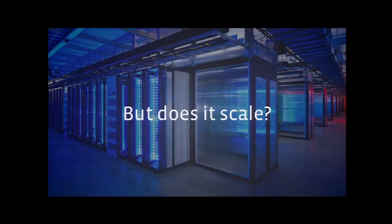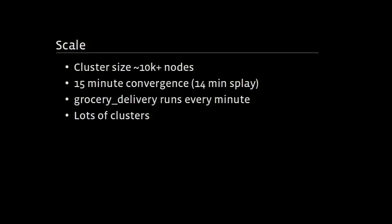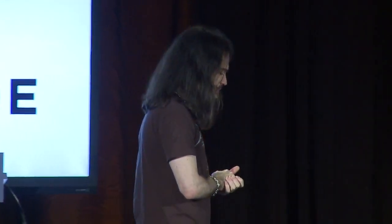Now the question on everyone's mind is: does it scale? In order to answer that, we have to define scale. Facebook has clusters of around 10,000 nodes each. We do 15-minute convergence — Chef client is cronned every 15 minutes with a 14-minute splay. Grocery delivery runs every minute, so give or take you're probably getting every change you check in deployed to the entire fleet within about 15 minutes, 30 minutes worst case. We have lots of clusters with multiple clusters per data center, multiple data centers per region, and multiple regions.